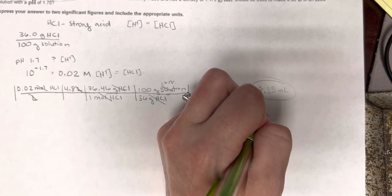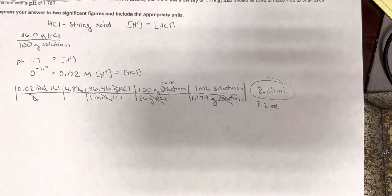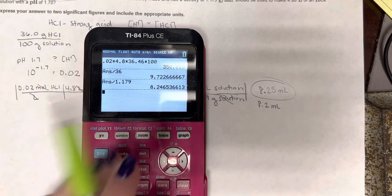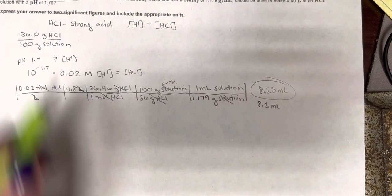Oh, it says two significant figures. Sorry, I lied. 8.2. Don't round up to there. So, don't round and round. 8.2. Two significant figures. Got it.